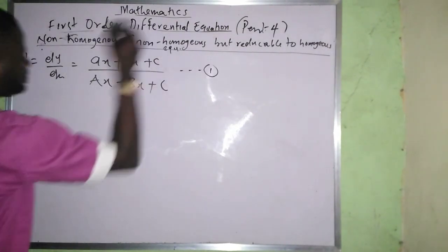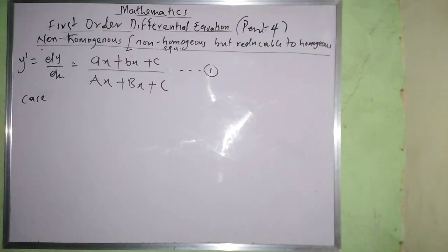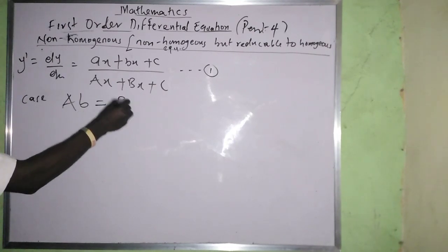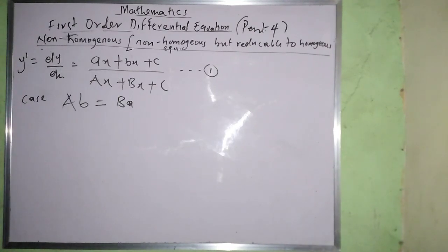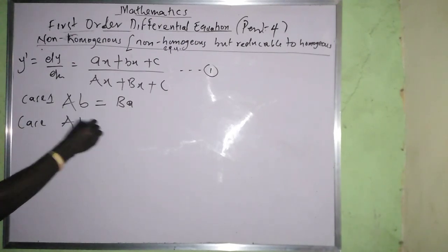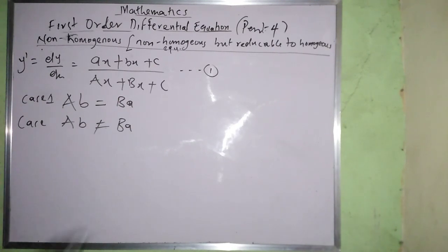Call this equation one. Case one is where a/b equals A/B — that is, the ratios are equal. Case two is where a/b is not equal to A/B.